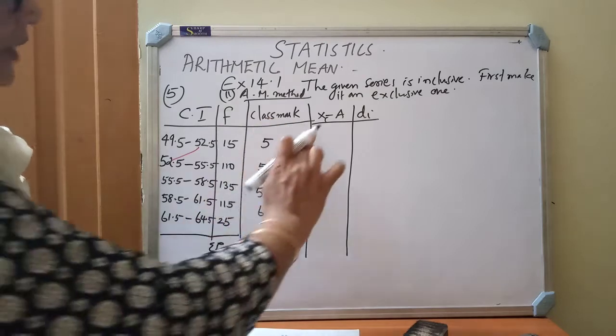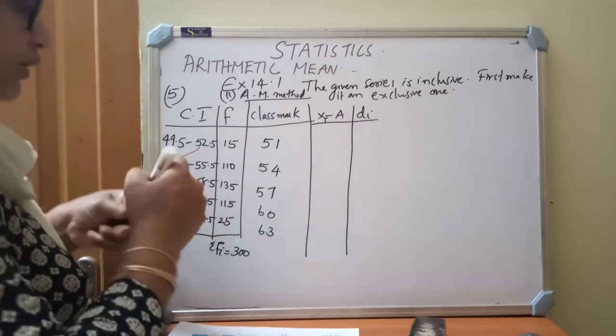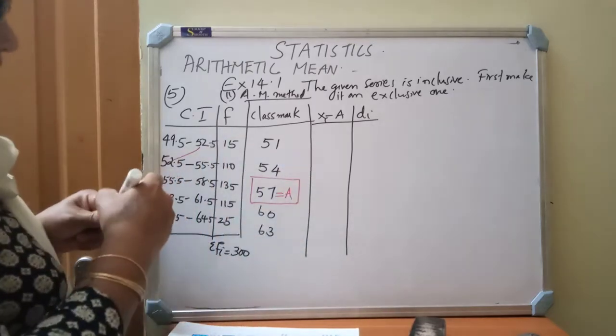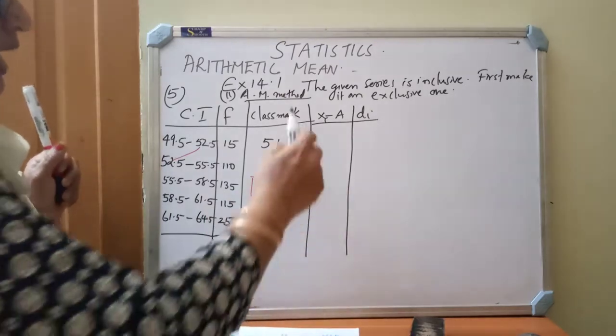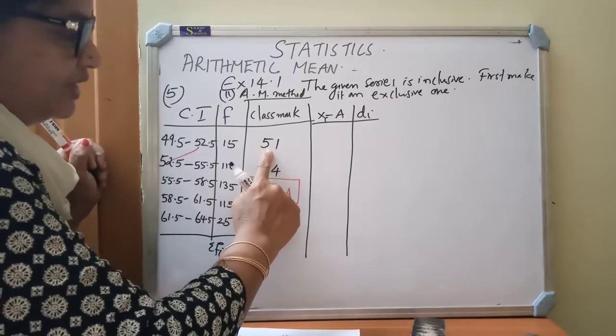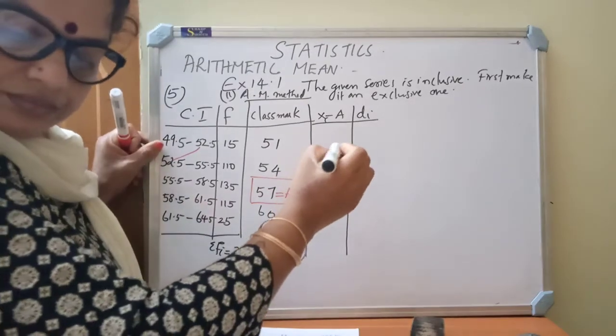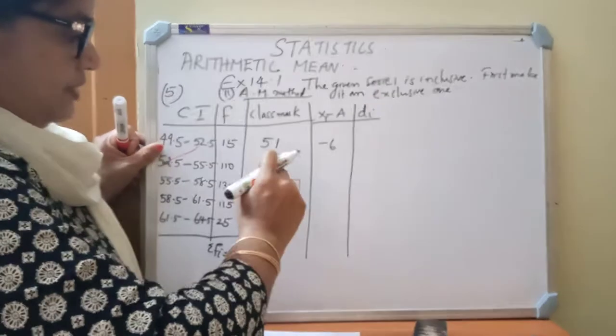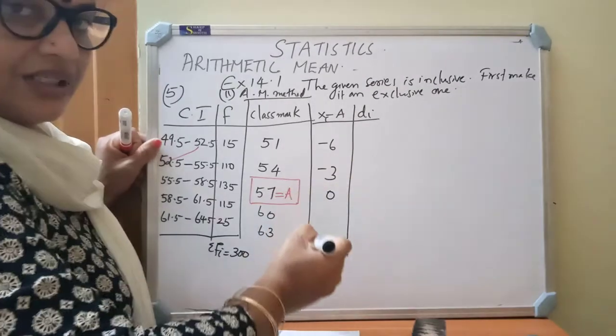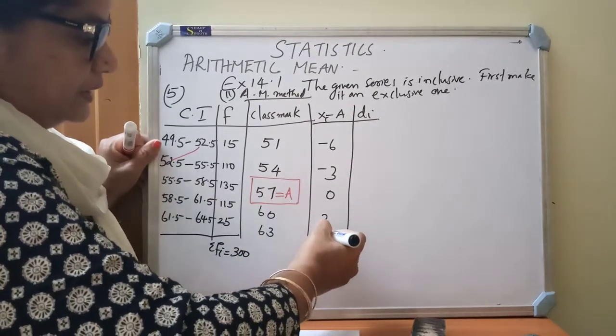X minus a. Odd number of data are there. So I am considering the middle value of x as a. Assumed mean I have to write. 57 is the assuming. Xi minus a means this is our a value, this is our xi value. 51 minus 57 is minus 6. 54 minus 57 is minus 3. 57 minus 57 is 0. 60 minus 57 is 3. 63 minus 57 is 6.